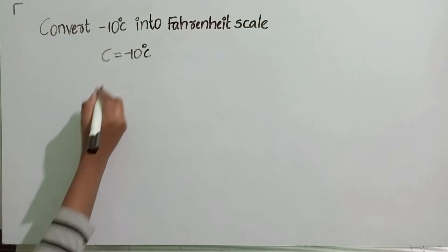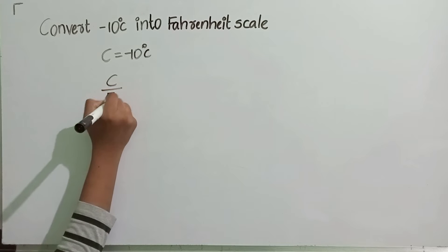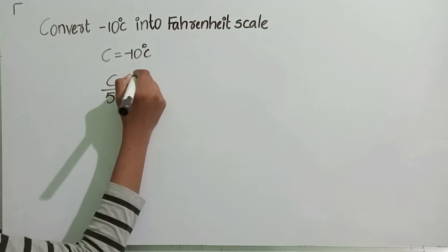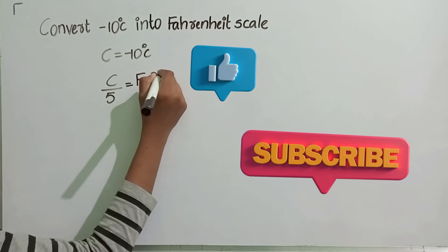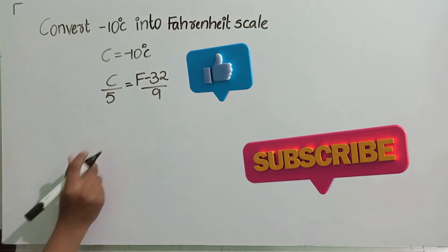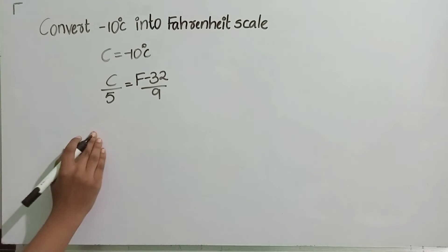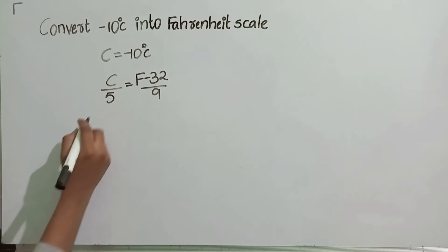We know that C by 5 is equal to F minus 32 by 9. This is the formula for conversion of centigrade into Fahrenheit and Fahrenheit into centigrade.